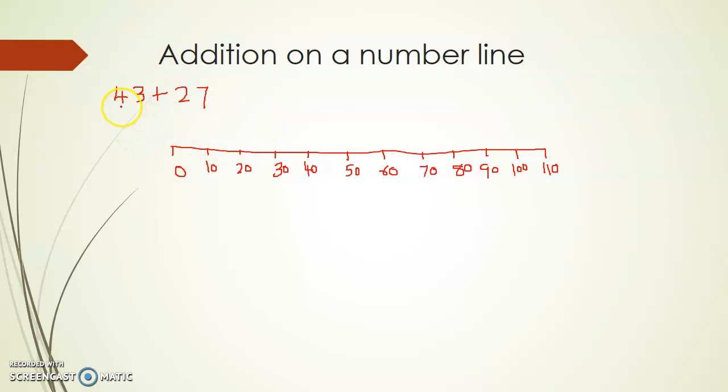The first thing that we have to do is mark 43 on the number line. It comes between 40 and 50. You would have ten divisions equalized, so 43 will be nearer to 40. I will mark this point as 43.